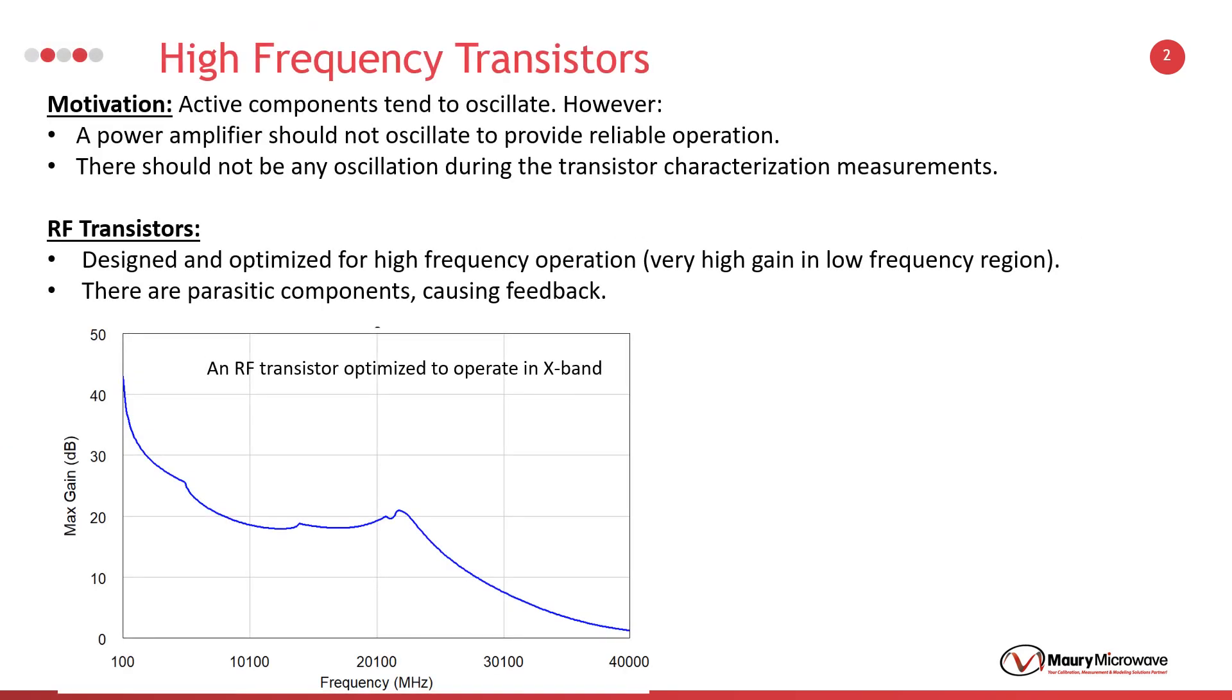RF transistors are designed and optimized for very high frequencies. Therefore, they have a large gain in the low frequency region. A feedback from output to input in addition to very high gain can trigger an oscillation. Therefore, it is essential to control the response of the transistor in the low frequency region.